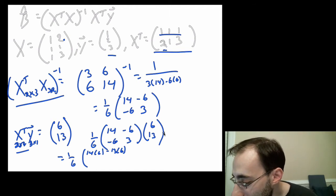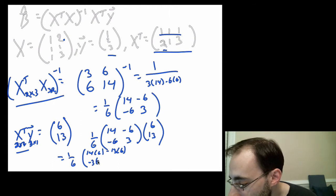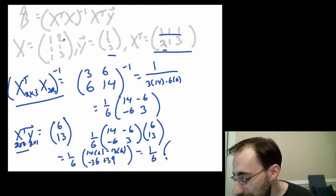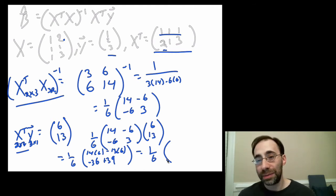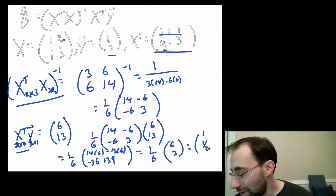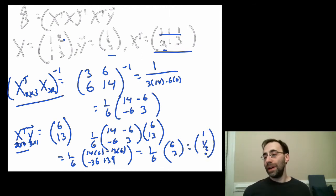The second one is going to be negative 36 plus 39. So now I have one sixth. The top is 14 times six minus 13 times six, that's just six. The bottom is negative 36 plus 39 is three. So we actually end up with a really conveniently nice vector, one and one half. So our estimate for the intercept is one, and our estimate for the slope, the rate at which a single unit change in x affects y, is one half.